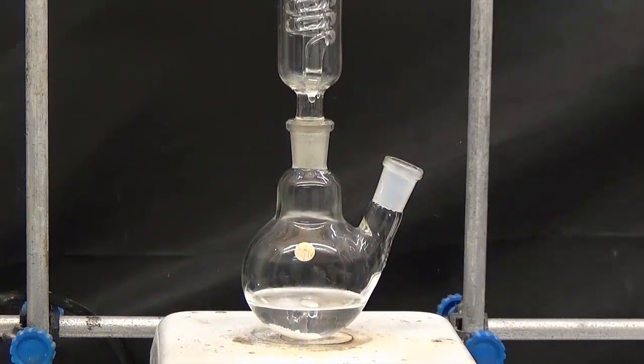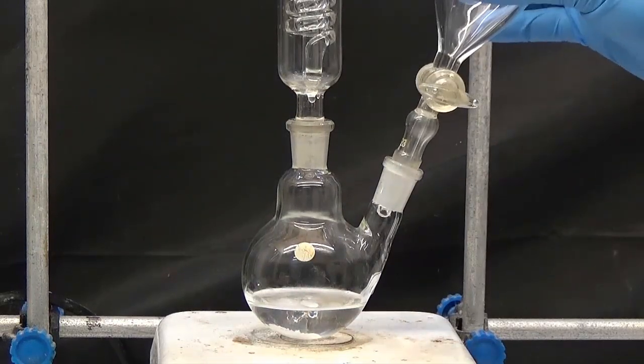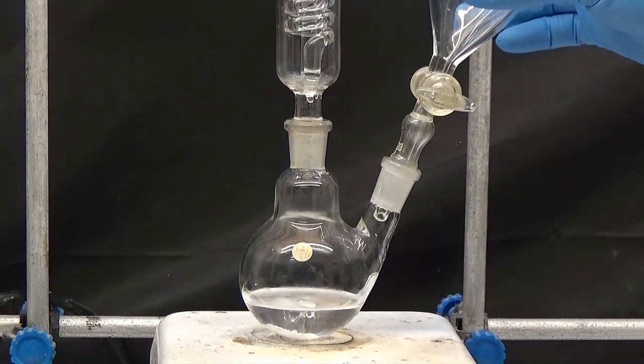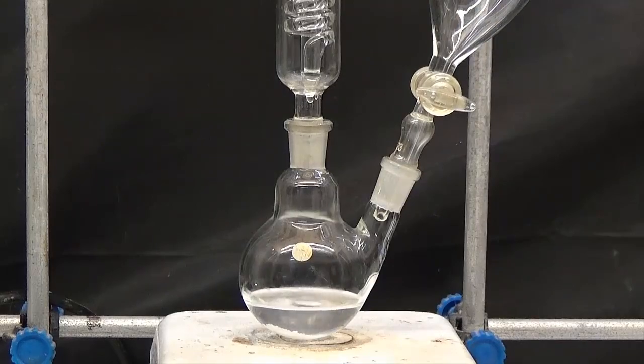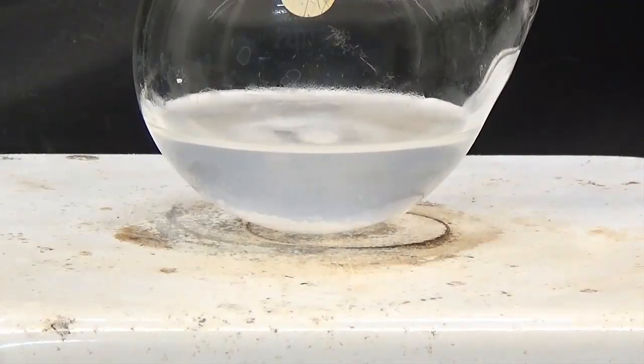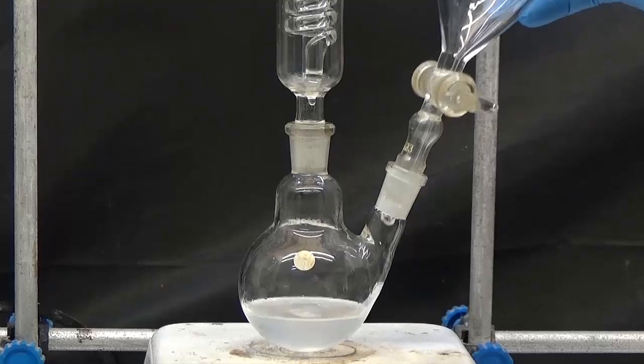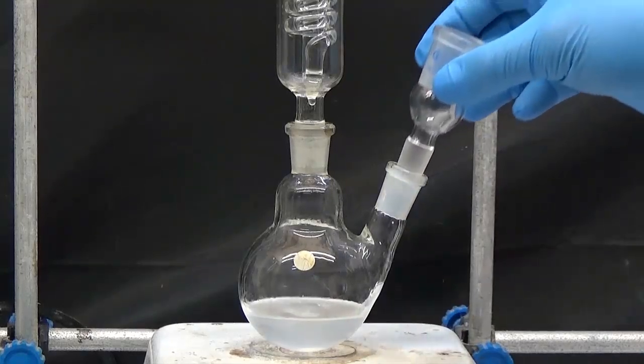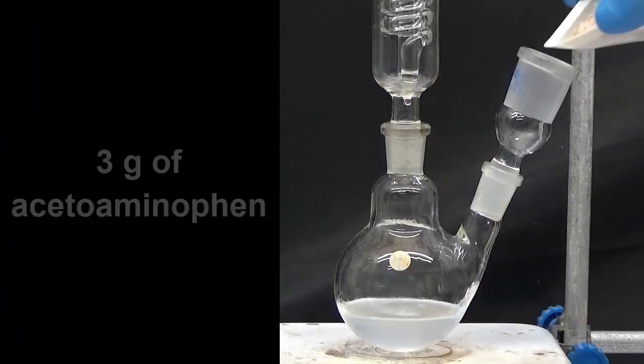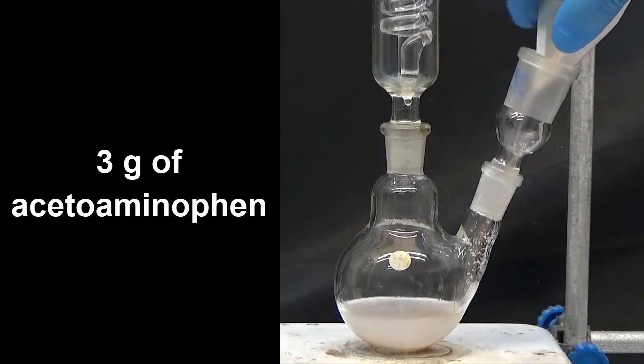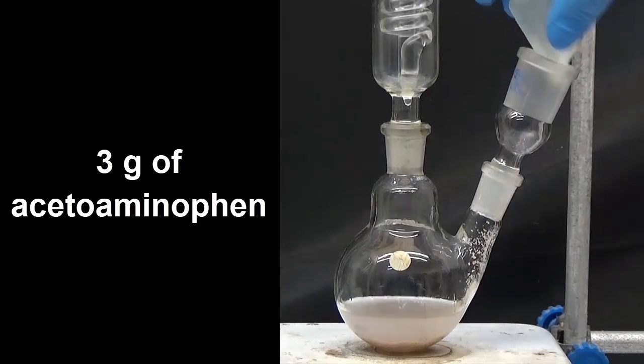We put an addition funnel on it. Warm with reflux until the sodium hydroxide dissolves. Once the dissolution is complete, add 3 grams of acetaminophen and heat for 15 minutes under reflux.